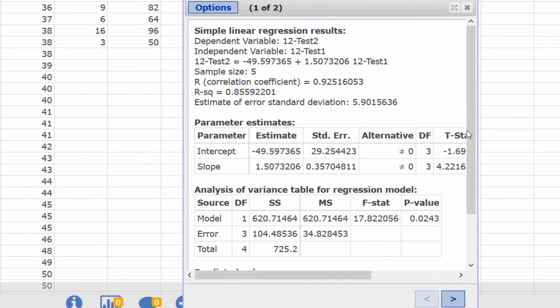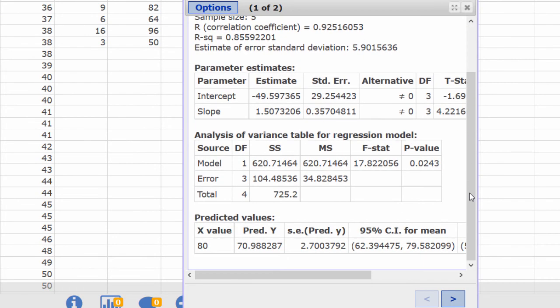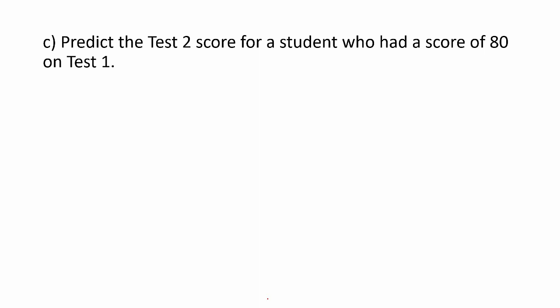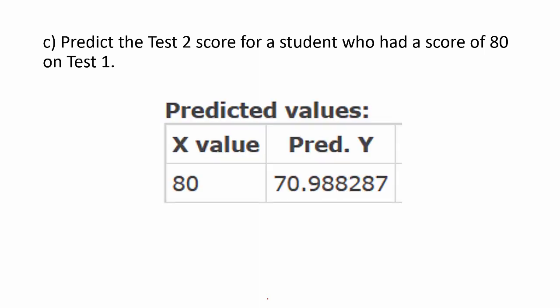Press Compute, scroll down in the output box, and here at the bottom we see for an x value of 80, the predicted value is 70.988287. Here is that output again, and notice that rounds to be 71.0.